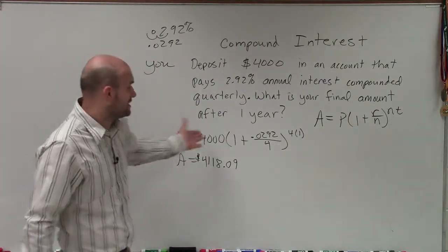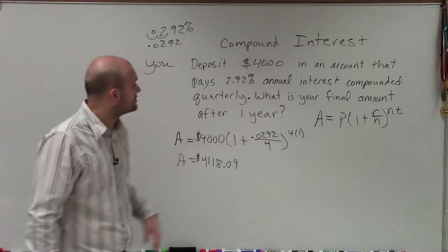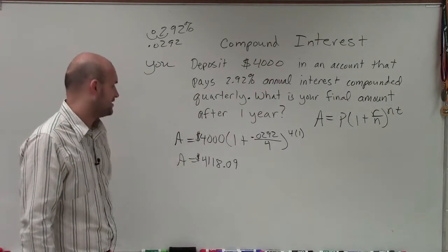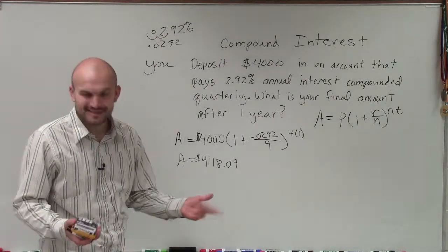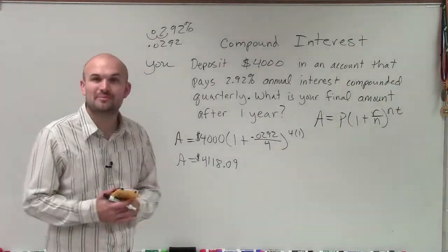So after one year, compounded at 2.92%, you will have earned $118.09. Thank you very much, ladies and gentlemen. That's how you apply compound interest.